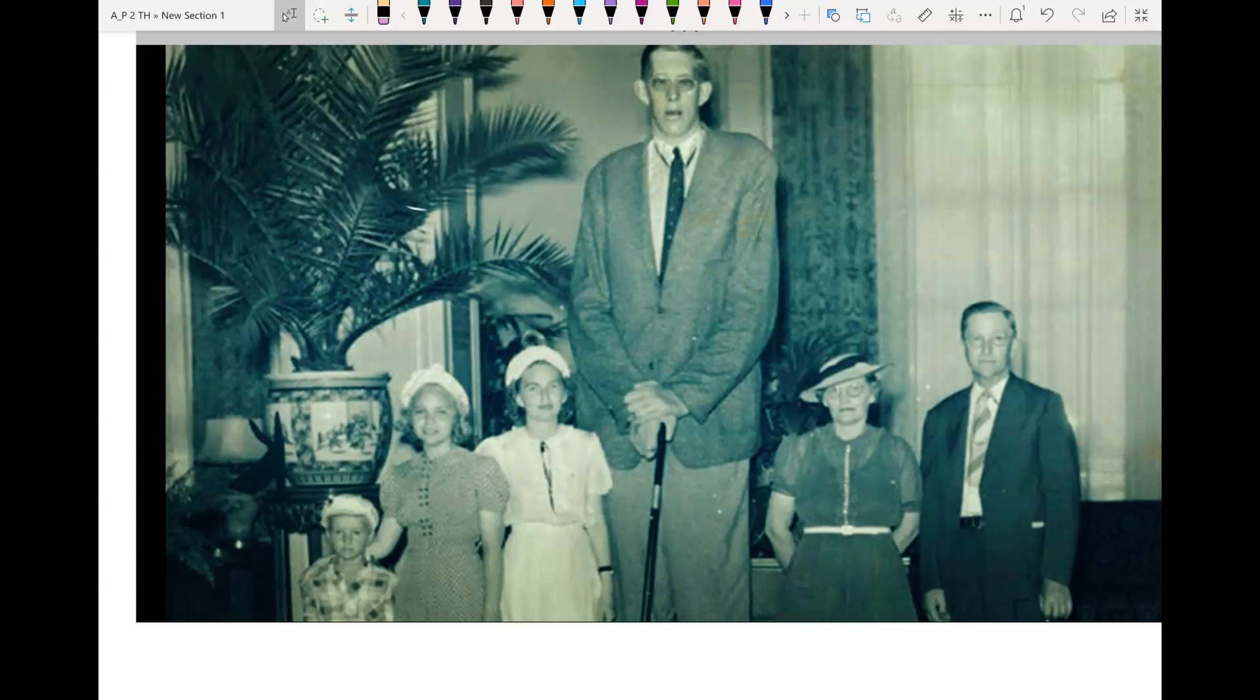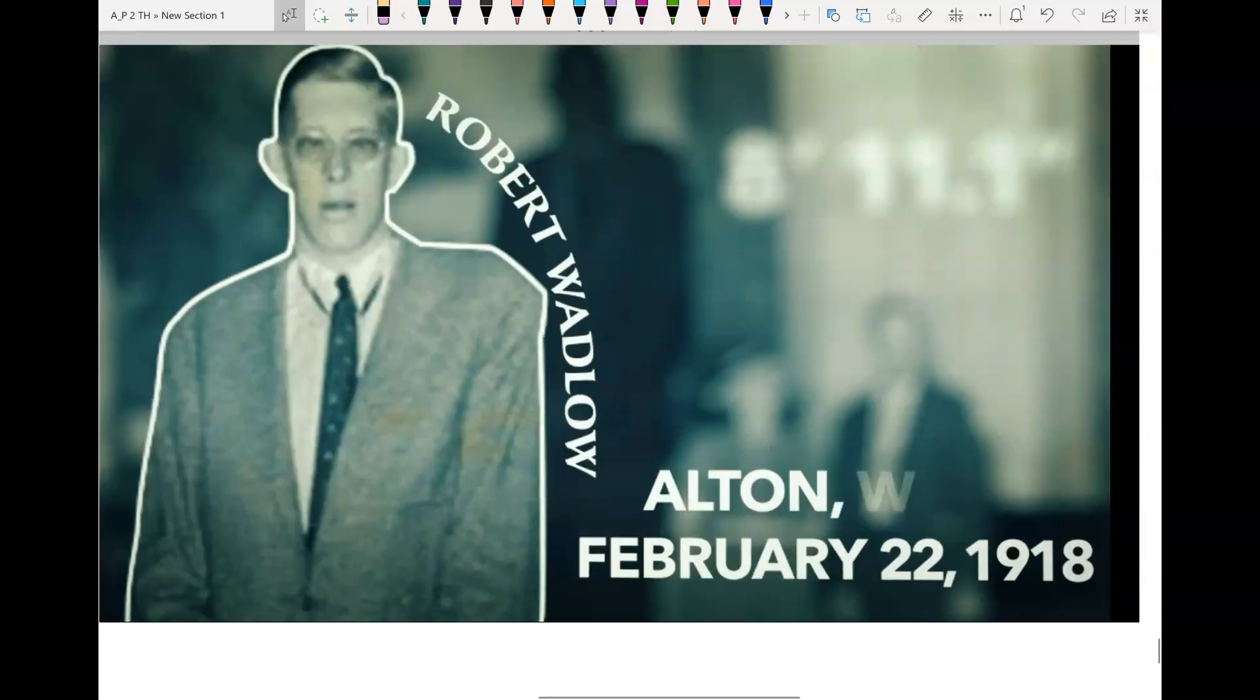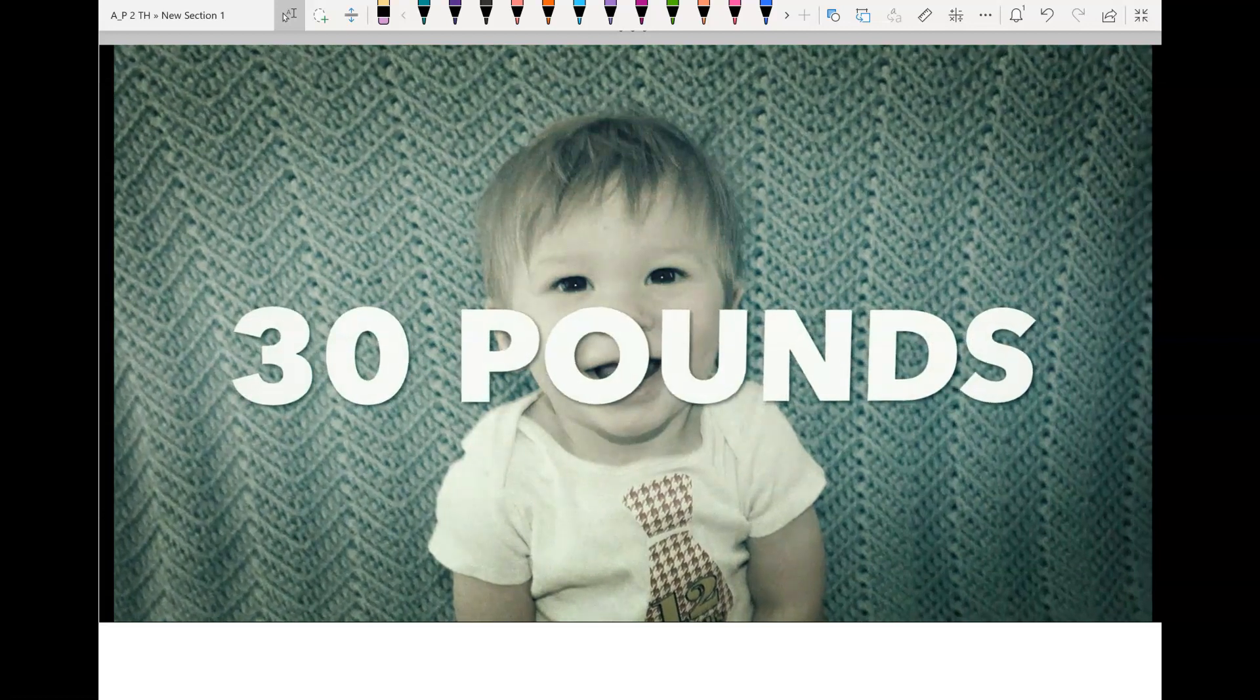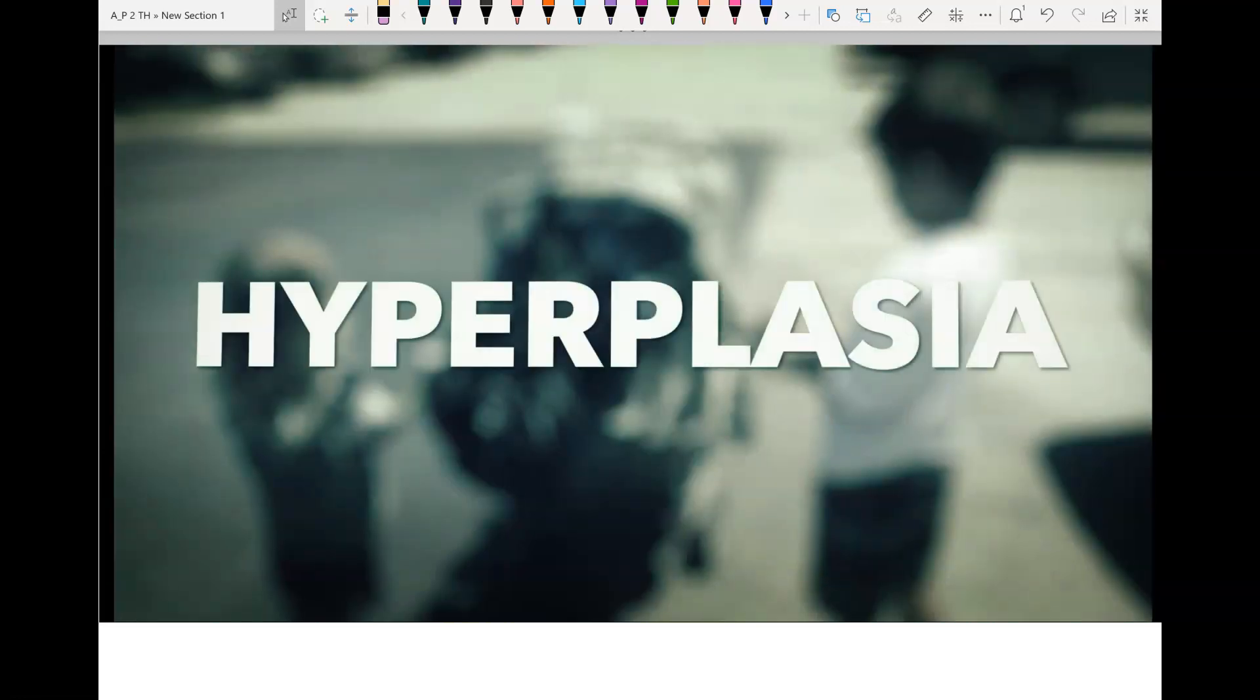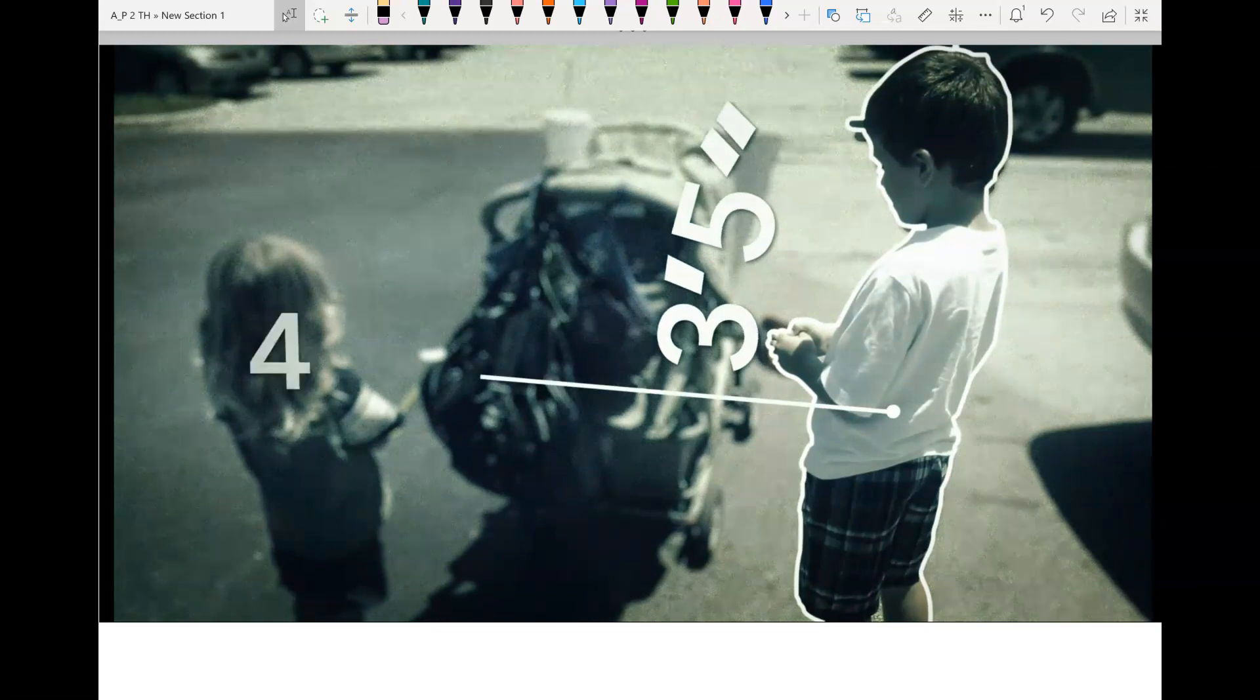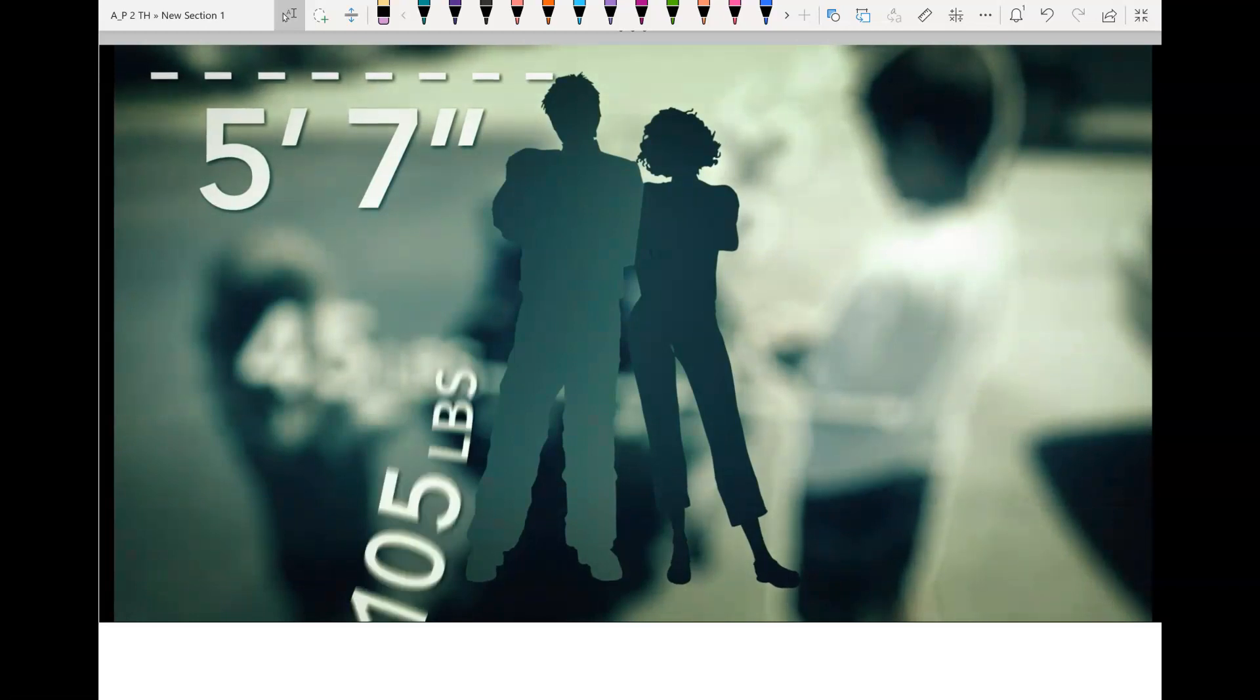Robert Wadlow holds the record for being the tallest person to have ever lived, being an outstanding eight feet 11.1 inches. Robert was born on February 22, 1918 in Alton, Illinois. He weighed a normal six pounds eight ounces when he was born. Nobody assumed anything out of the ordinary, until he reached six months and weighed thirty pounds, which is more than double the average weight of a six month old. Throughout his life, Robert would continue to grow at an outstanding rate due to a condition known as hyperplasia, which caused the cells in his body to constantly multiply, to keep him growing and growing fast. By his first birthday, Robert was three feet five inches tall, weighing forty-five pounds. At eleven months old, he was already walking. By the age of five, Robert was taller than his own mother at five feet seven inches. He weighed in at one hundred five pounds.